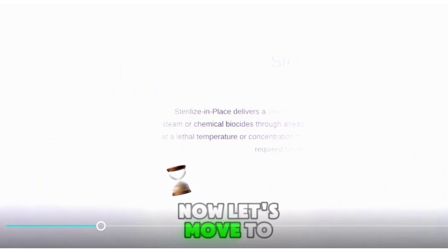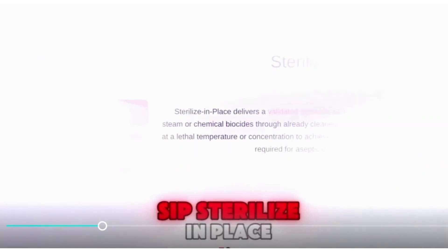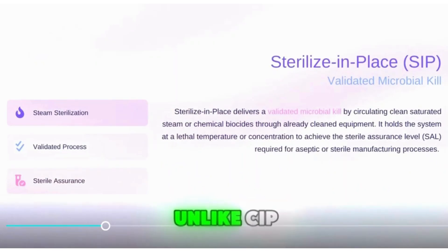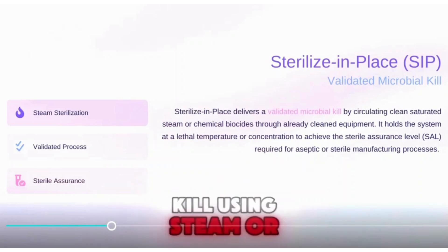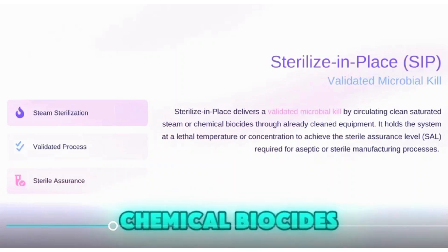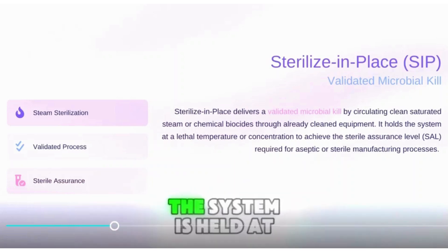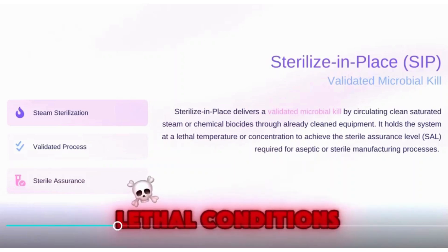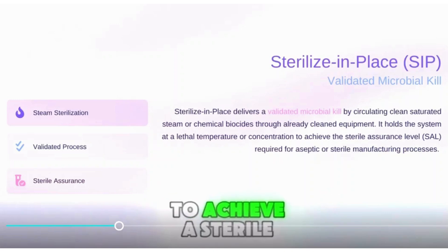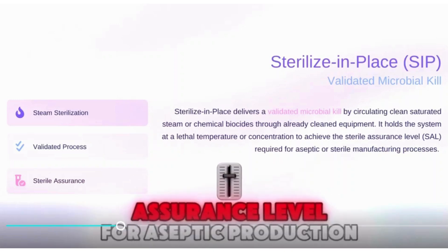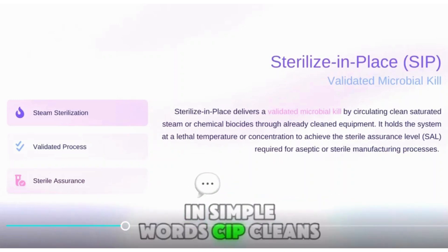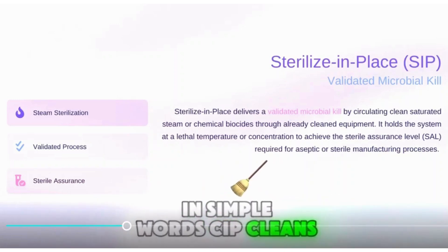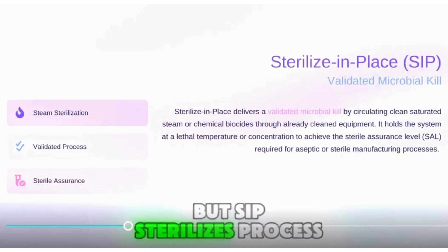Now let's move to SIP — Sterilize in Place. Unlike CIP, this step ensures microbial kill using steam or chemical biocides. The system is held at lethal conditions to achieve a sterile assurance level for aseptic production. In simple words, CIP cleans but SIP sterilizes.